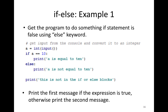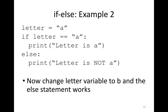Here is a Python if-else example. Get input from the console and convert it to an integer: a = int(input()). If a == 0, print 'a is equal to 10', else print 'a is not equal to 10'. There is also a print statement at the end that is not part of the if or else blocks. The program prints the first message if the expression is true, otherwise prints the second message. Another example: letter = 'a', if letter == 'a': print 'letter is a', else: print 'letter is not a'.